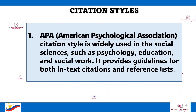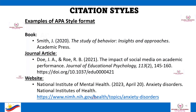Citation styles: First is the APA, or American Psychological Association, citation style, which is widely used in the social sciences such as psychology, education, and social work. It provides guidelines for both in-text citations and reference lists. Here are examples of APA style format for book, journal article, and website. The MLA, or Modern Language Association, citation style format examples are also shown below.